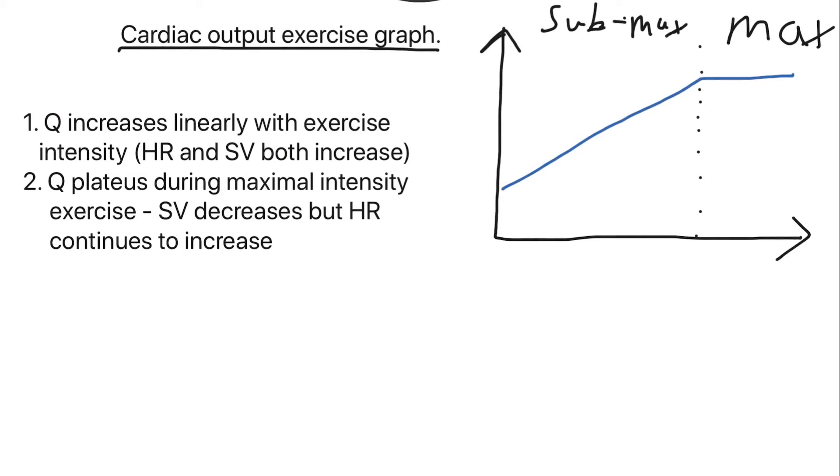But moving on, this one's very simple. The cardiac output exercise graph. Cardiac output increases linearly with exercise intensity. Why? Because both heart rate and stroke volumes are increasing. Why does that mean this? Well, cardiac output equals stroke volume times heart rate.